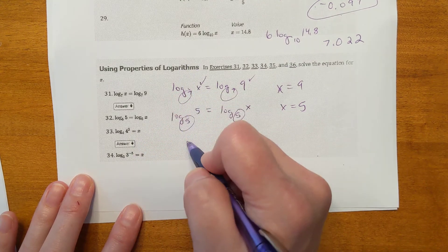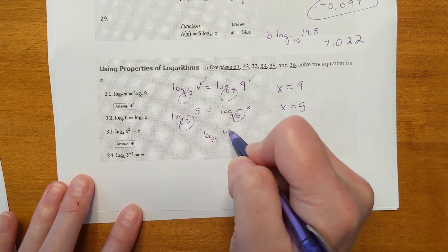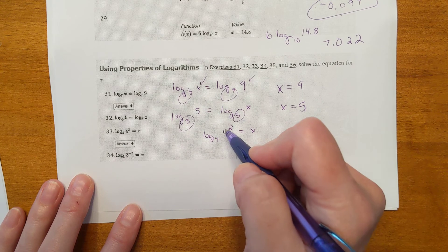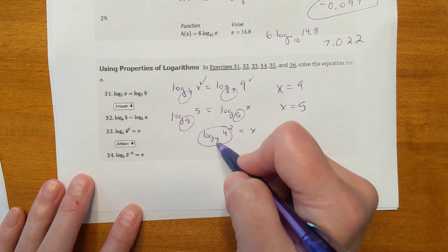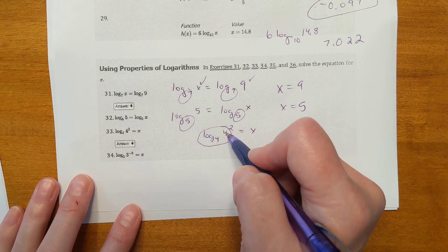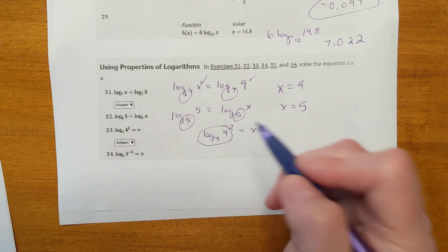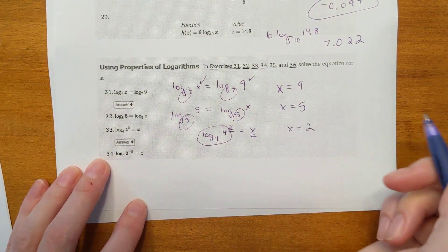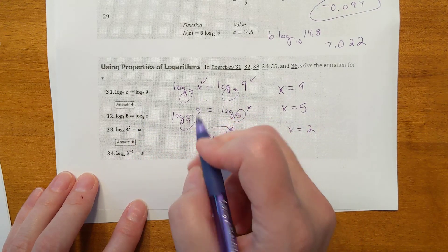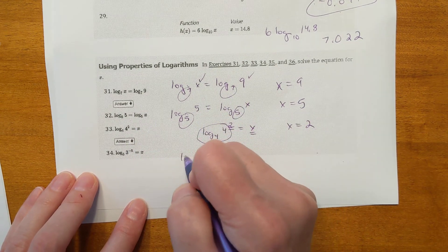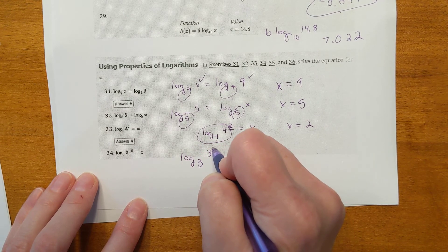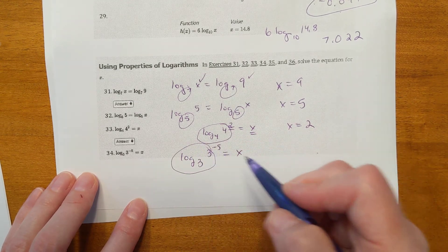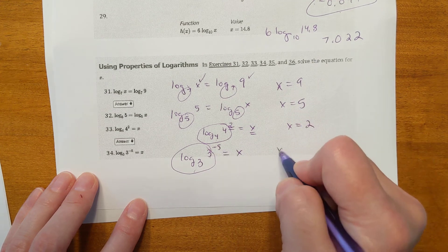Log base 4 of 4 to the 2nd equals x. The inverse property says log base a of a to the x is just x, so x equals 2. Next: log base 3 of 3 to the negative 5 equals x. Same rule — you've got the same base and same value, so x equals negative 5.